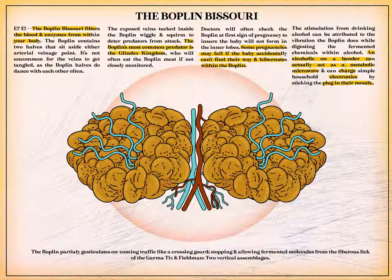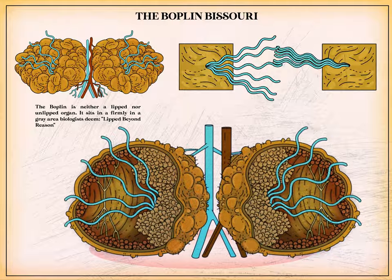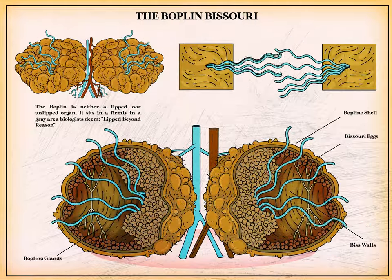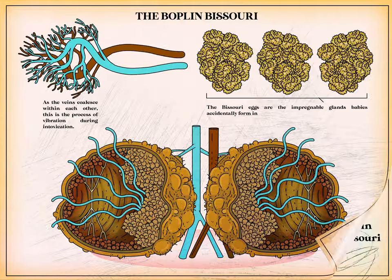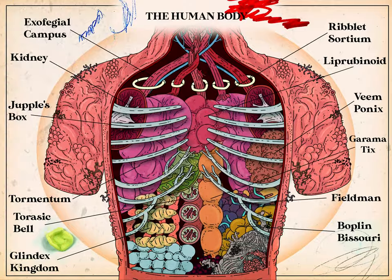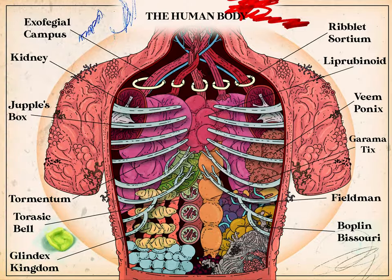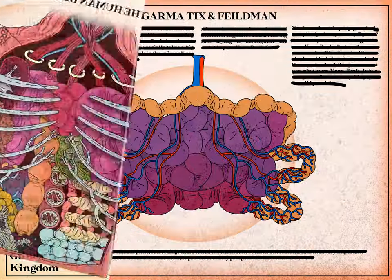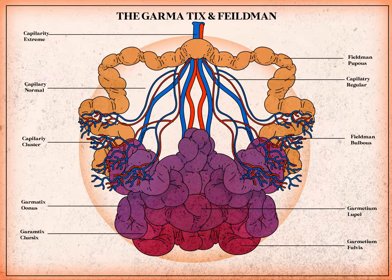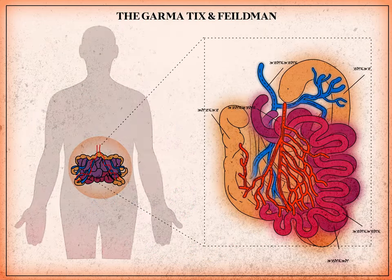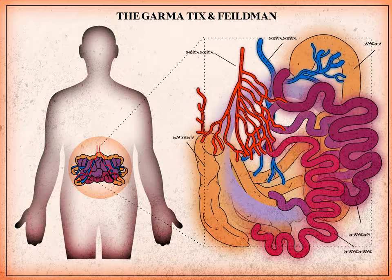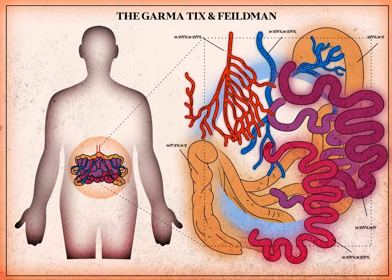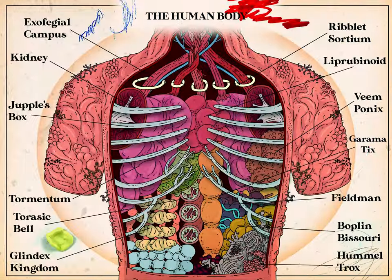The boplin partially gesticulates oncoming traffic like a crossing guard, stopping and allowing fermented molecules from the fibrous lick of the garmatics and fieldmen — two vertical assemblages. The garmatics and fieldmen regulate bosticular bodies across the pulmonic artery fields, most commonly known for splice reduction and great pycnicizing, similar to that of the humiltrox.